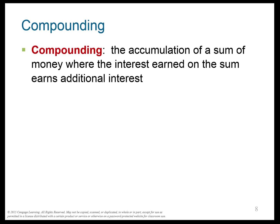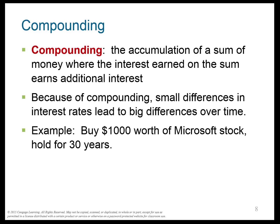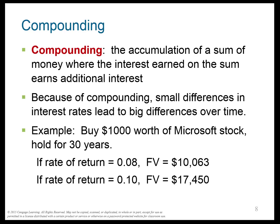Compounding is the idea that you earn interest on the interest you've already earned. That's why a $100 deposit grows to $105, then $110.25 — the extra $0.25 is interest earned on the previous interest. Small differences in interest rates lead to big differences over time. For example, $1,000 of Microsoft stock held for 30 years at 8% returns gives you about $10,000 — ten times your investment. At 10%, it nearly doubles to $17,000, even though the interest rate only went up slightly. That's the power of compounding.